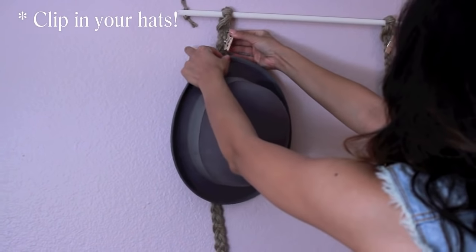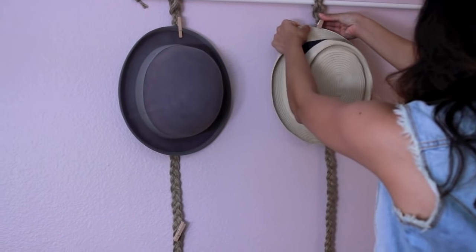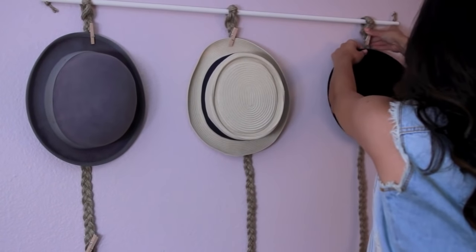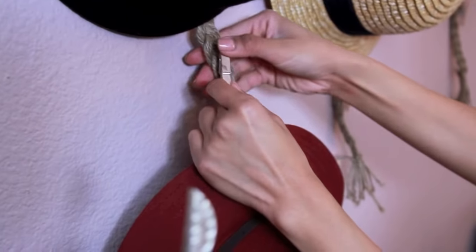And that's it! Now you can just start clipping your hats onto the wall. I hope you enjoyed and found this DIY very easy. Now you can organize, store, and keep your hats in shape. This also nicely displays your hat collection.